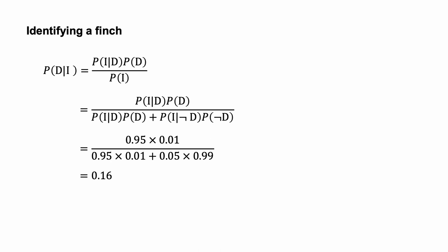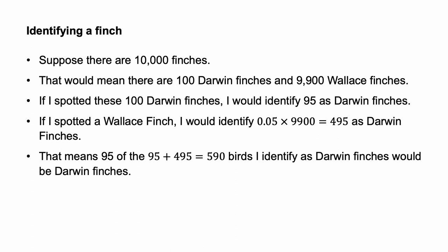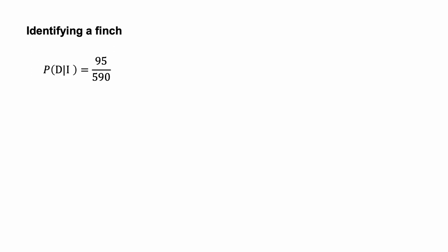The probability that it is a Darwin finch is 16%. Next, I use natural frequencies to calculate that same conditional probability. Suppose there are 10,000 finches — that would mean there are 100 Darwin finches and 9,900 Wallace finches. If I spotted these 100 Darwin finches, I would identify 95 as Darwin finches. If I spotted a Wallace finch, I would identify 0.05 × 9,900 = 495 as Darwin finches. That means 95 of the 95 + 495 = 590 birds I identify as Darwin finches would actually be Darwin finches. Therefore, the probability is 95 divided by 590, which equals 0.16.